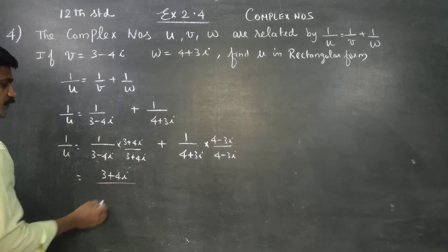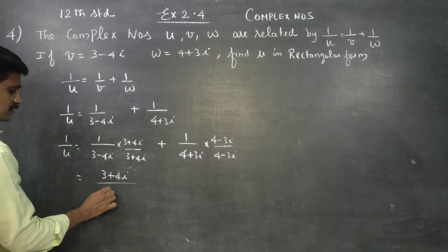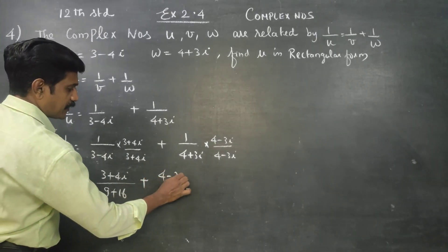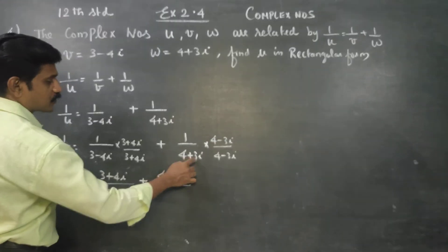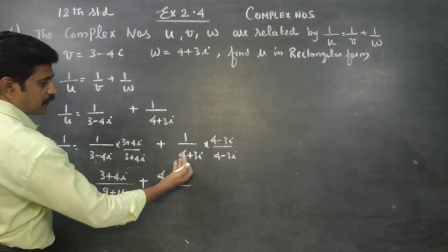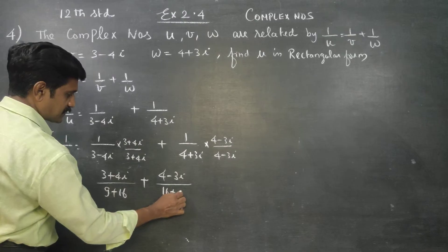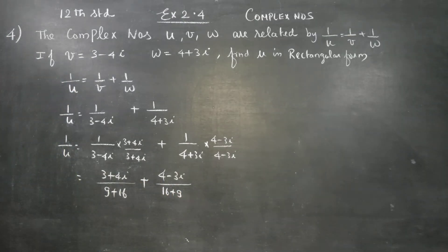3 square plus 4 square. 3 square is 9 plus 4 square is 16. Plus, 4 minus 3i, using a square plus b square, 16 plus 9.